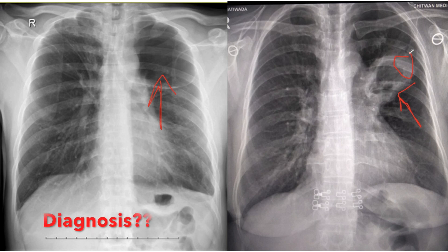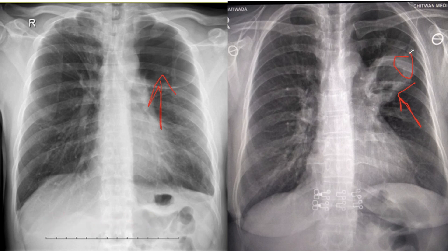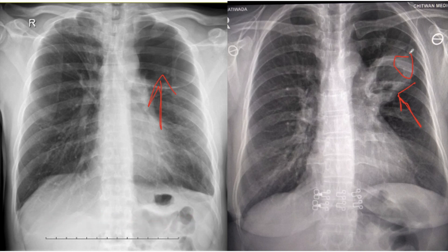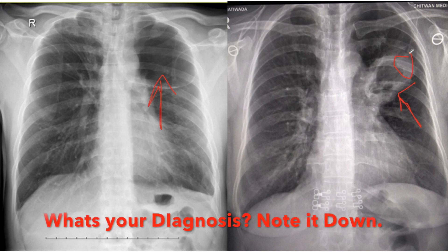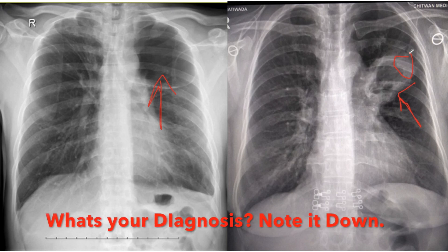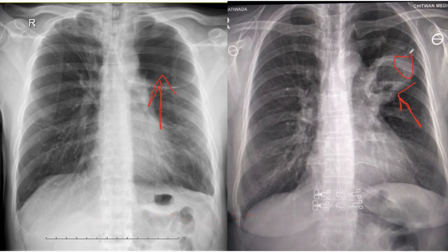What is the diagnosis in both these cases? Is it cavity, bulla, pneumatocele, or bronchiectasis? Pause this video for a few seconds to write your opinion on a piece of paper for both these cases, and then proceed with the video to check if you are correct.